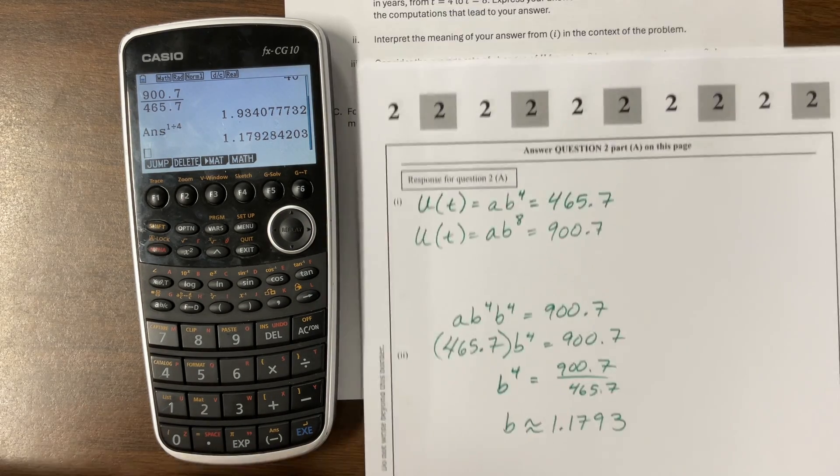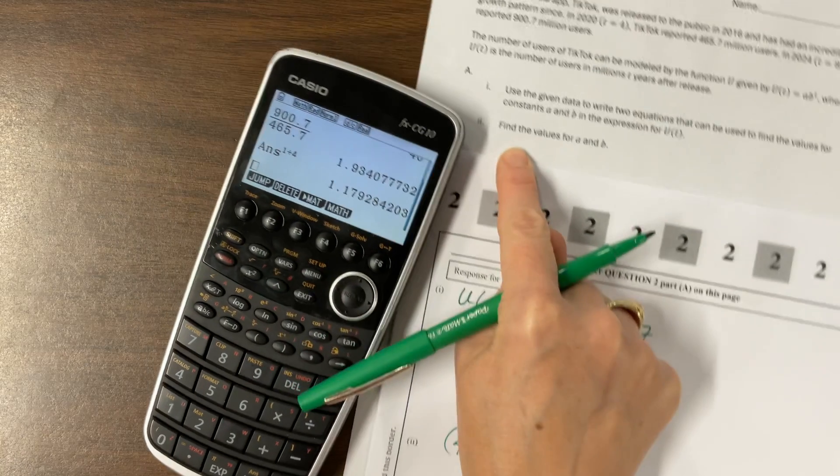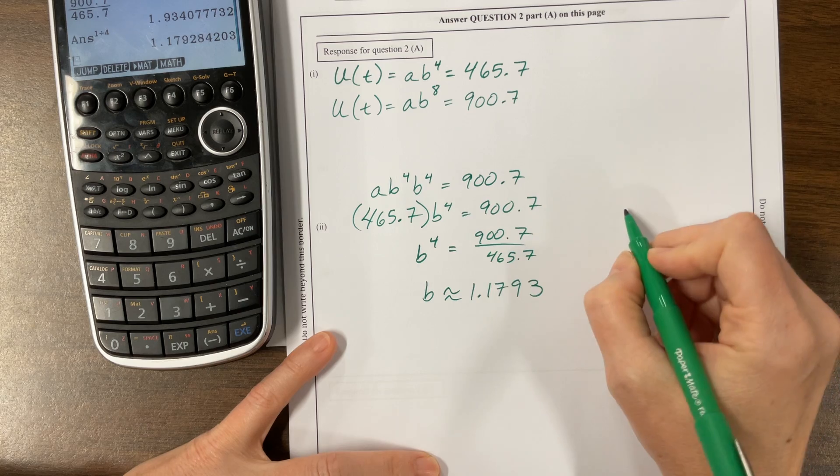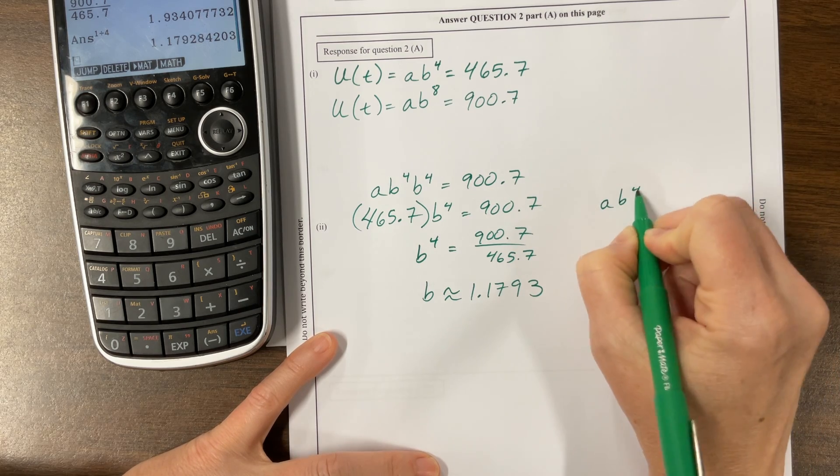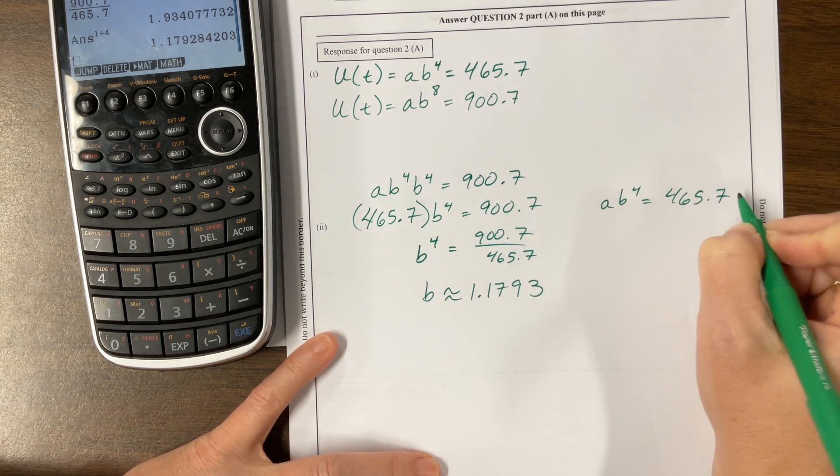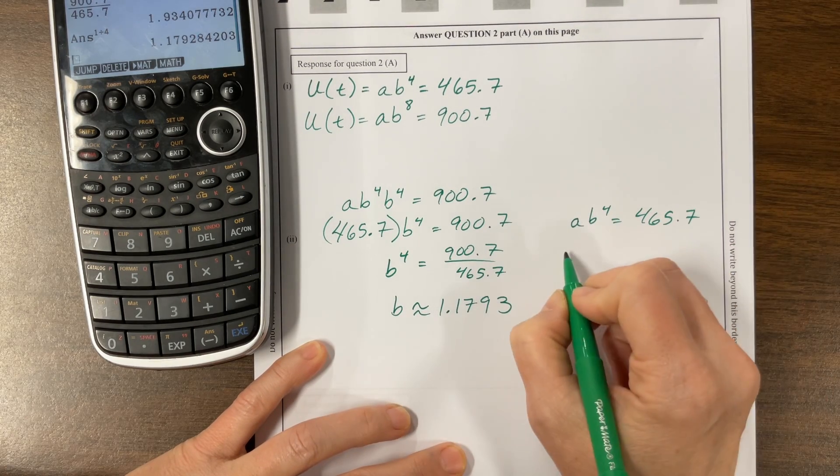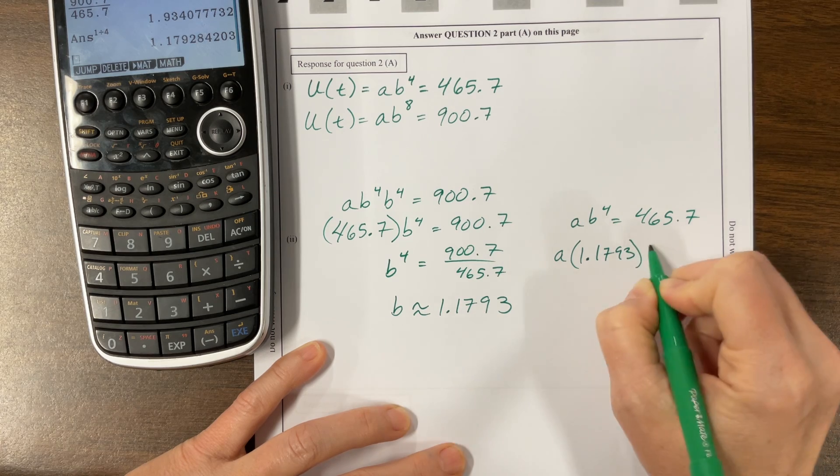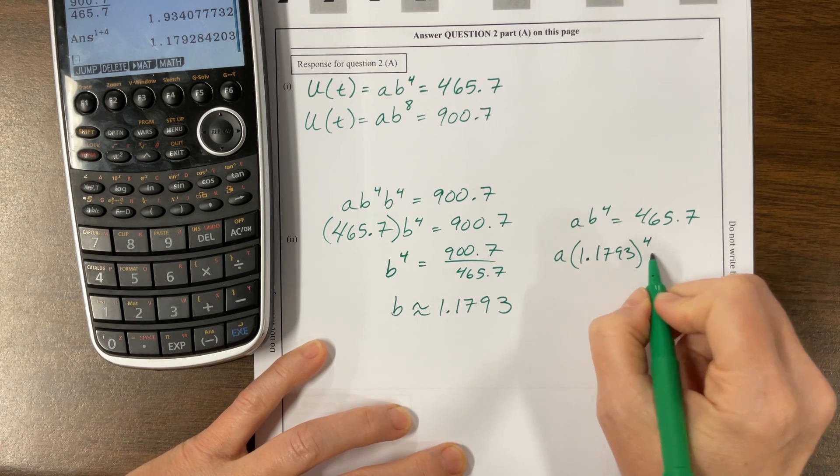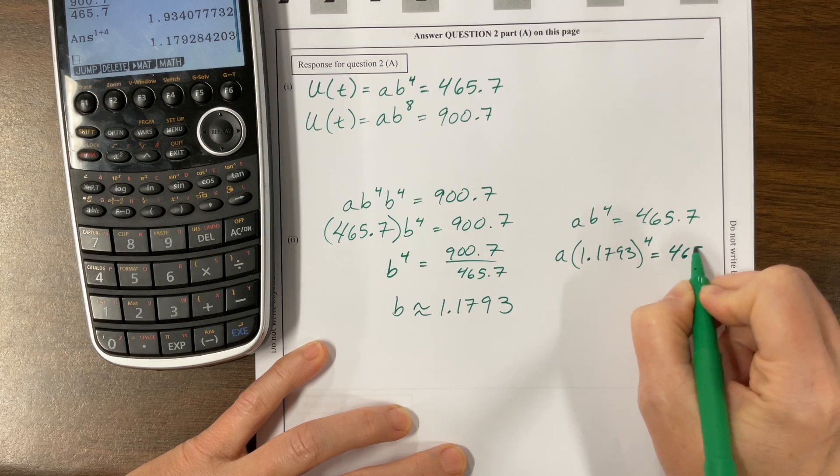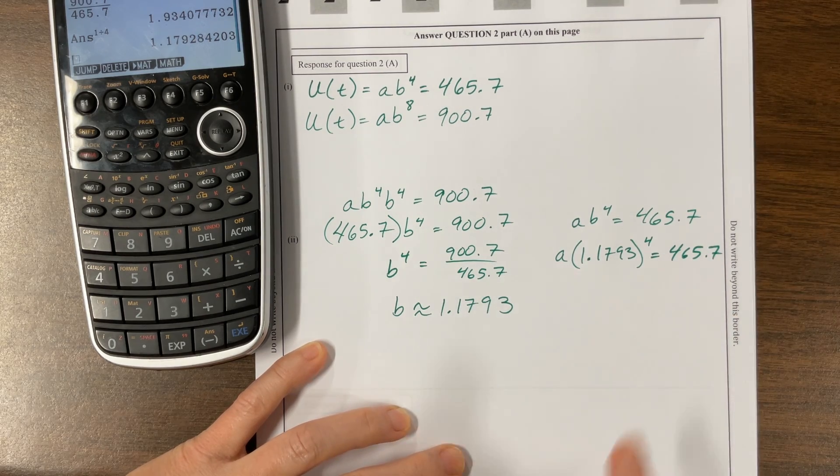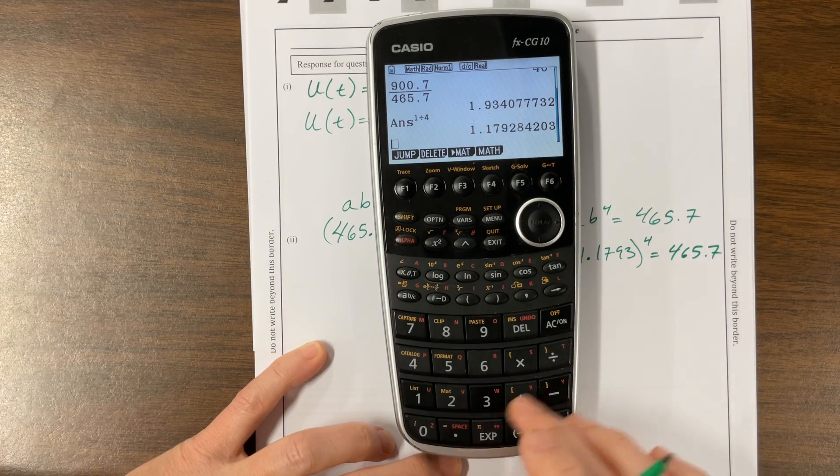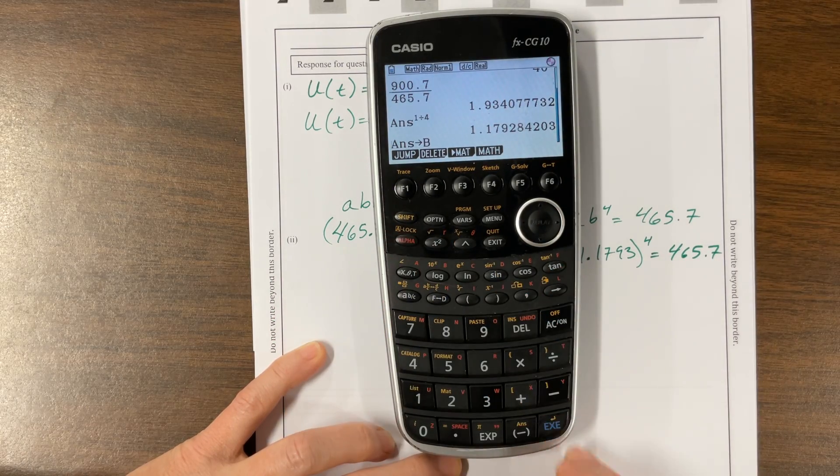Have I answered the question they asked? Nope, because they said find the values for A and B. So then I can come back into one of my other equations. I can actually take this number and I could store this as B. That might be helpful for me later.